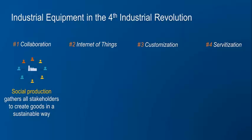Firstly, collaboration leads to social production, bringing all stakeholders together and creating machines or machine parts in a sustainable way. The way we collaborate is changing — sending multiple emails is cumbersome. Many companies are applying new social collaboration in their organisations to streamline the exchange of ideas, to promote working in groups, and to make the decision process a smooth one.